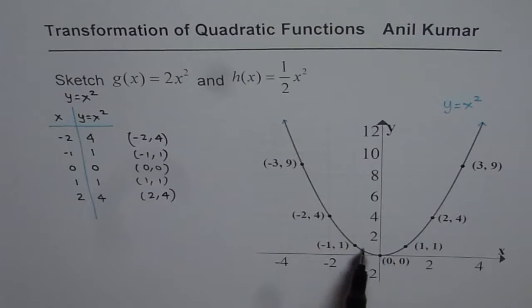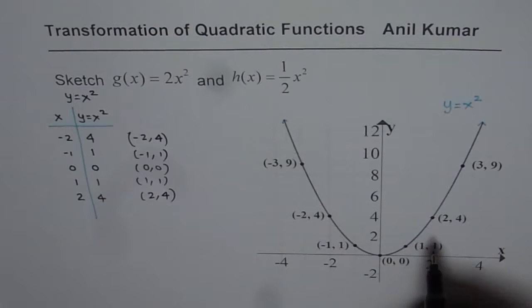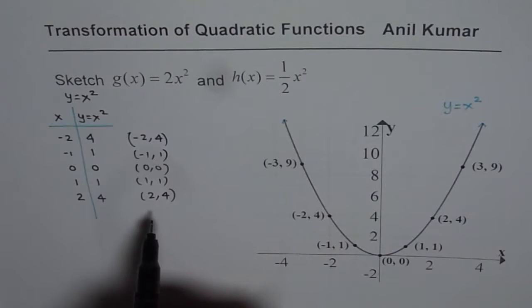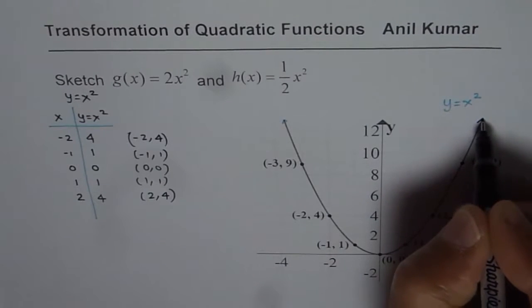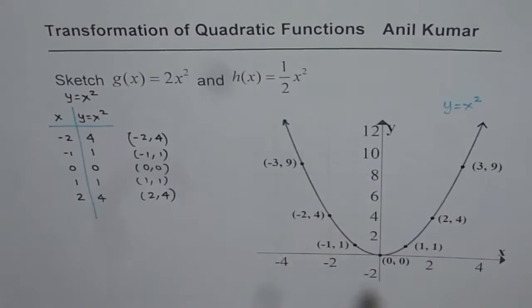Once you plot these points, connect them with a smooth curve like a parabola. The shape of this curve should be like a parabola as shown here. At the end you can mark arrows to show that this graph is continuous and it extends upwards.